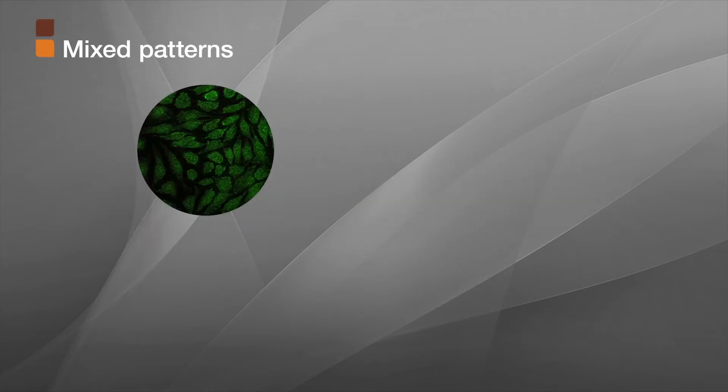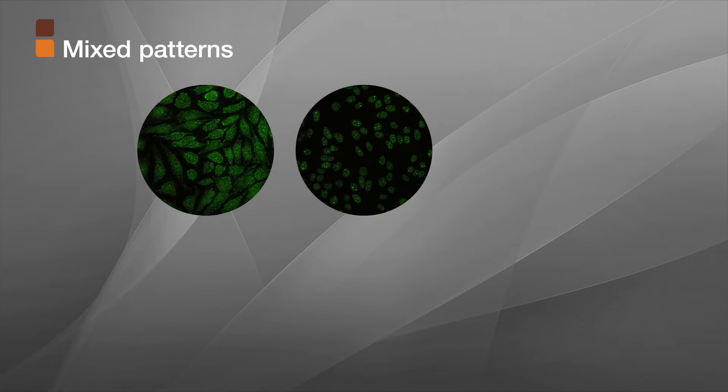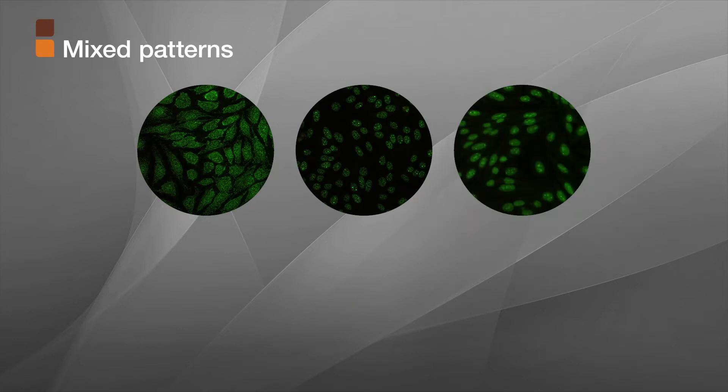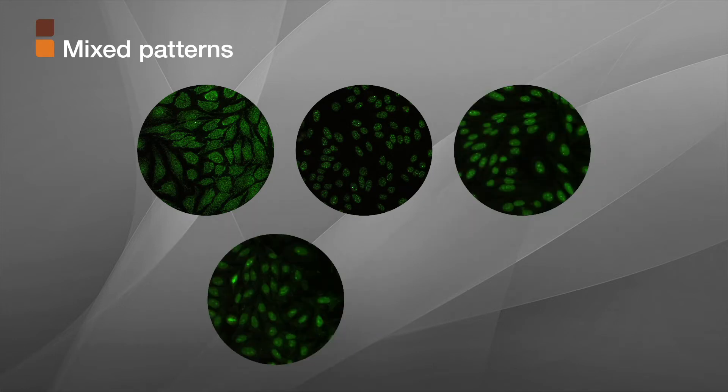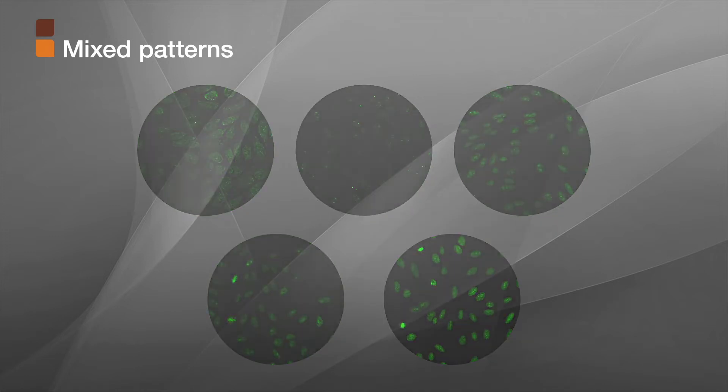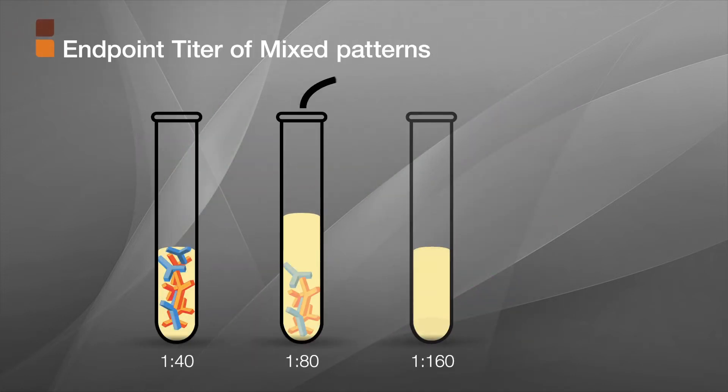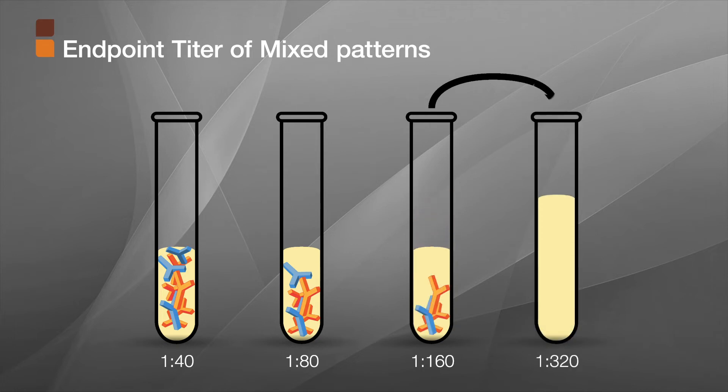It is not uncommon for patients to have more than one antibody or to have some antibodies produce a complex staining pattern, which can appear as a mixed pattern. If characteristics of more than one pattern are seen, titering the specimens can help determine the ANA-IFA pattern.